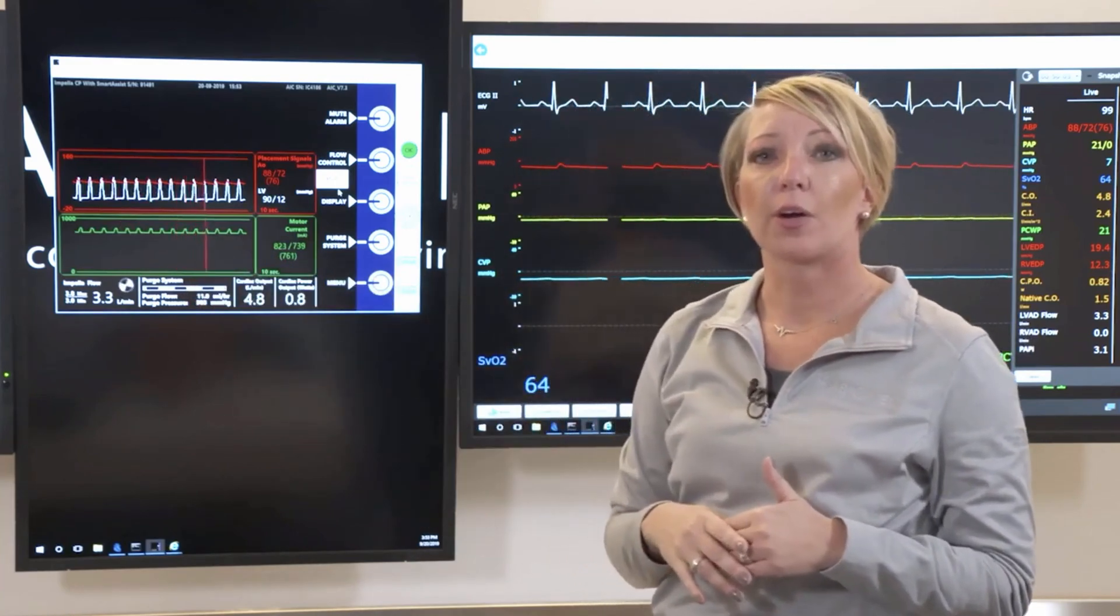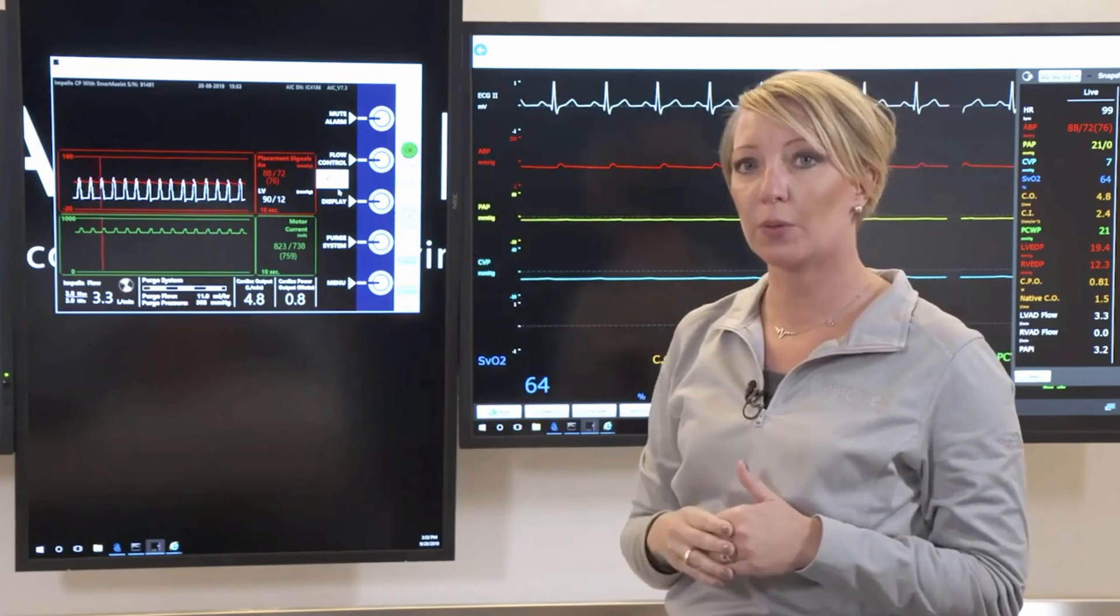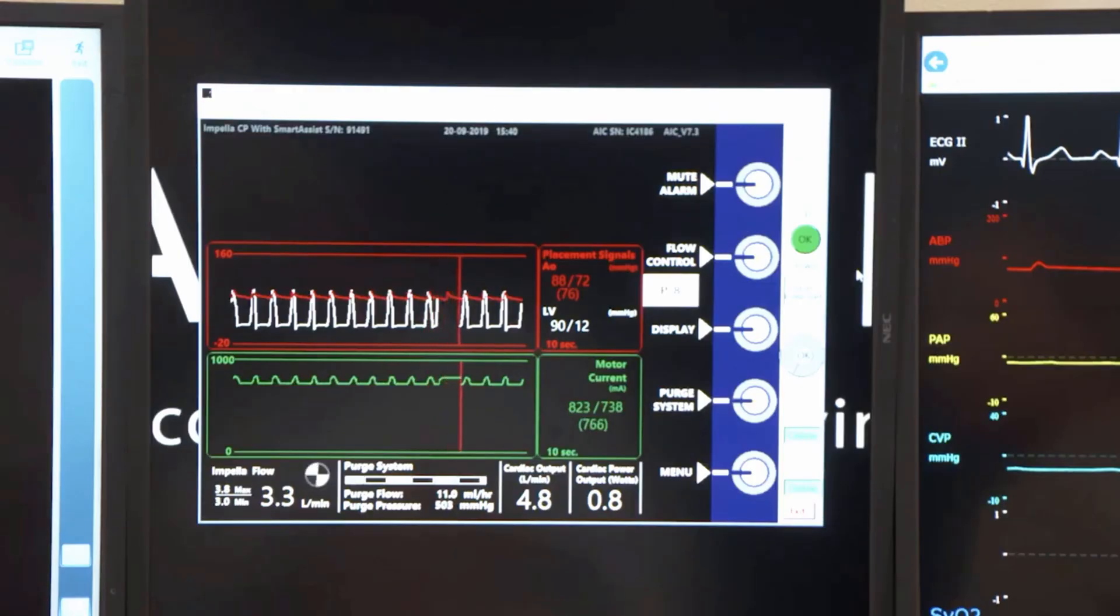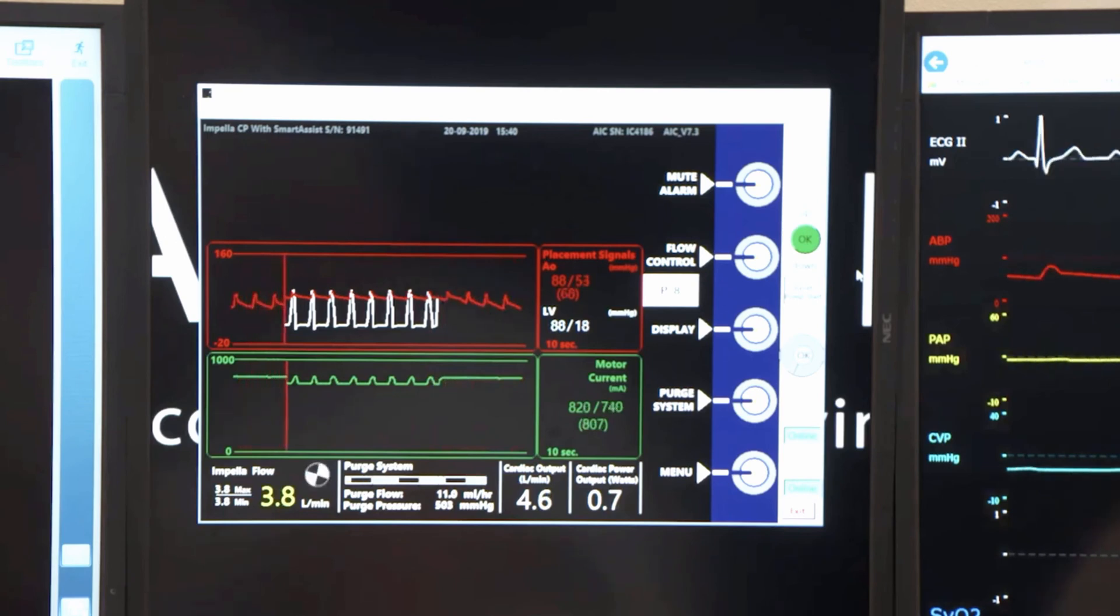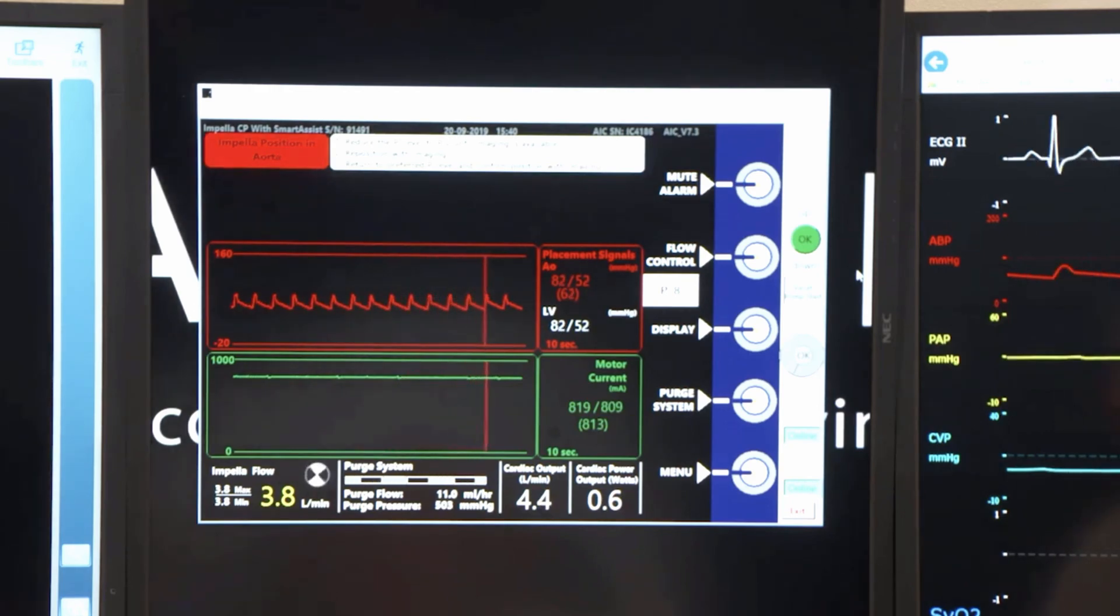When the device is in the correct position, we will have a nice pulsatile motor current. When the device is malpositioned or maybe drifts in or out, then it would be reflective of a flat motor current because the aortic valve is no longer creating that pressure gradient across the cannula.